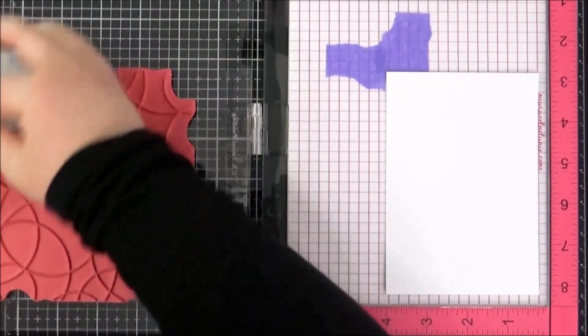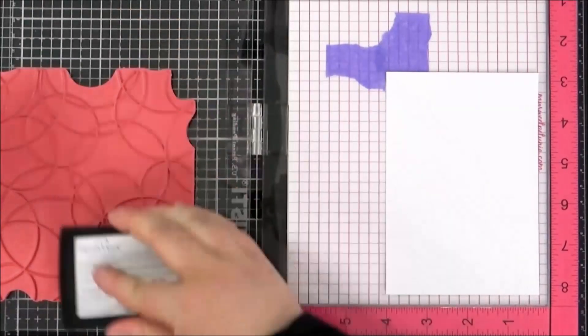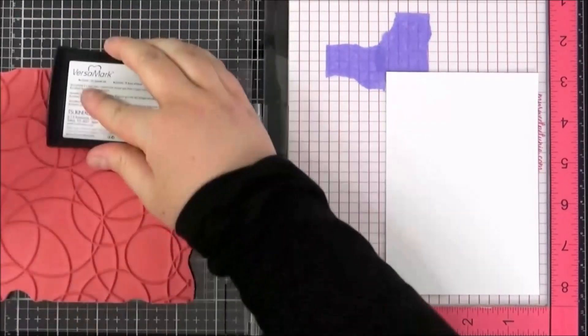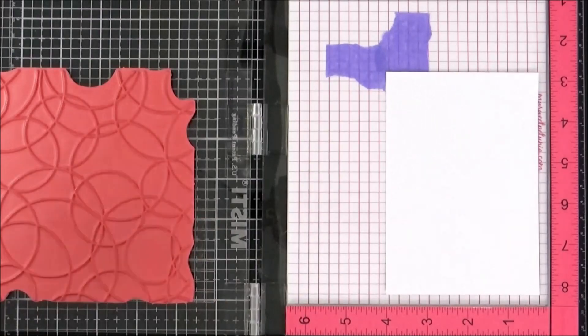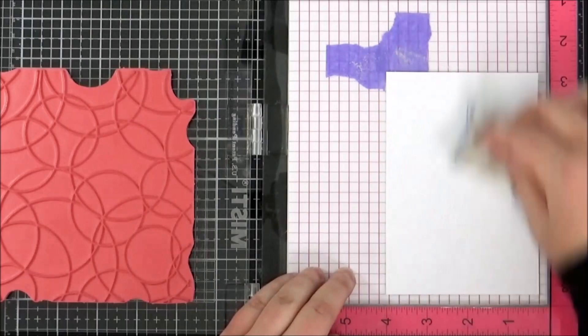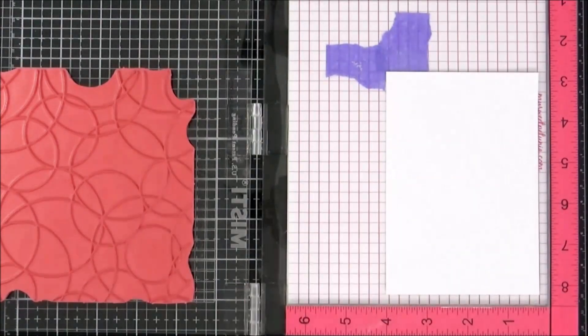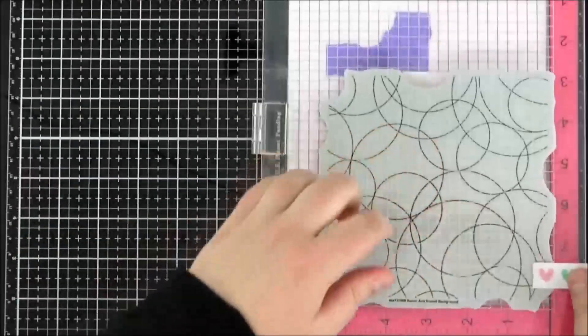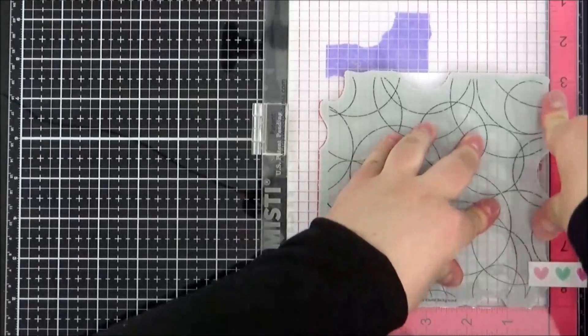I'm going to ink up that background stamp really well with Versamark ink. This is a clear sticky ink that the embossing powder will stick to. I can just close the door of the MISTI and stamp that down. I'm prepping the cardstock first with an anti-static powder tool, then I can press that down.